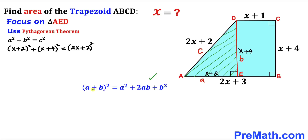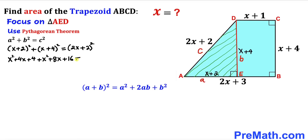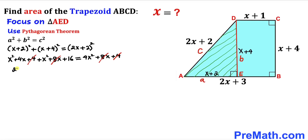Recalling the identity (A plus B) squared equals A squared plus 2AB plus B squared, we expand each binomial. (x plus 2) squared gives x squared plus 4x plus 4. (x plus 4) squared gives x squared plus 8x plus 16. (2x plus 2) squared gives 4x squared plus 8x plus 4. Combining like terms on the left: 2x squared plus 12x plus 20 equals 4x squared plus 8x plus 4. The 8x terms cancel and the constant 4 cancels, giving 2x squared plus 4x plus 16 equals 4x squared.